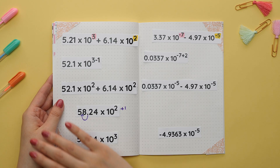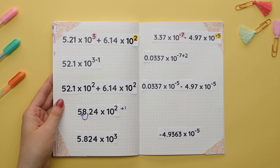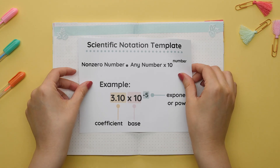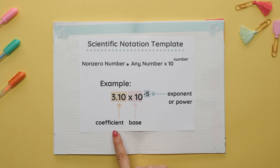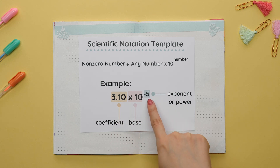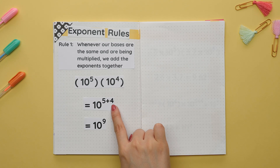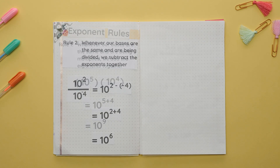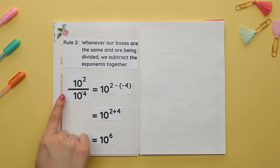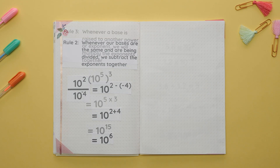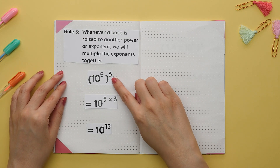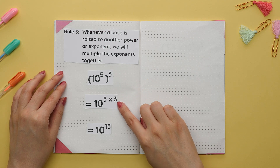This next part is good to know if you aren't allowed to use a scientific calculator. Before we go over how to perform operations with numbers in scientific notation, remember the typical scientific notation template. We refer to the number in front as the coefficient, the 10 is called the base, and this number is our exponent or power. When multiplying or dividing, it is important to know three main exponent rules. First, when bases are the same and being multiplied, we add the exponents. Second, when bases are the same and being divided, we subtract the exponents. Third, when a base is raised to another power, we multiply the exponents.